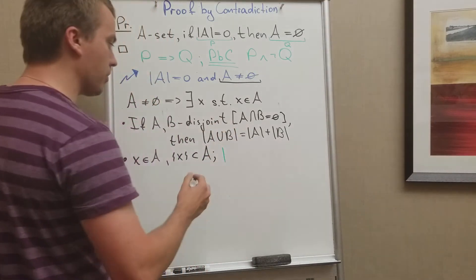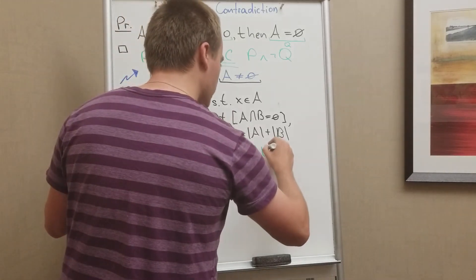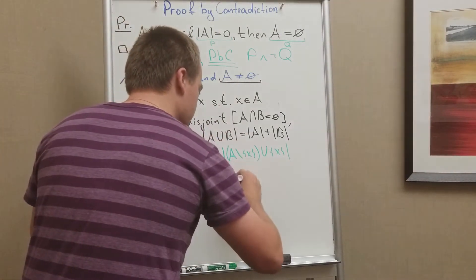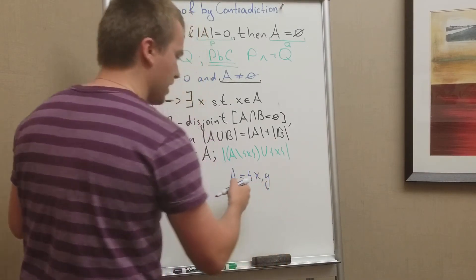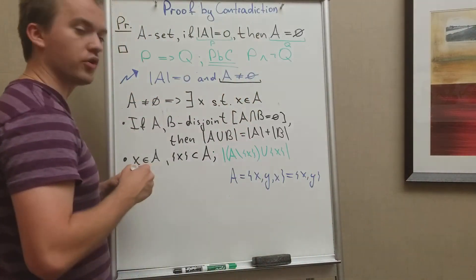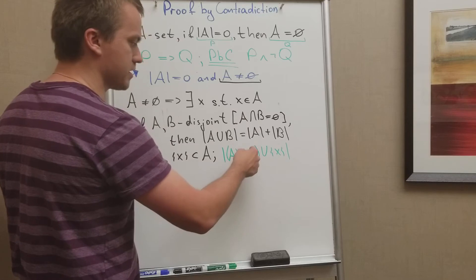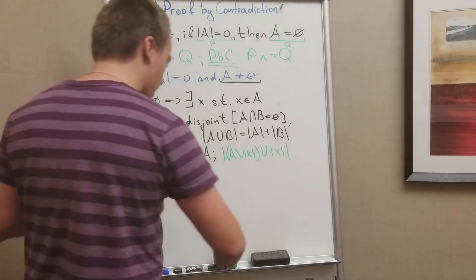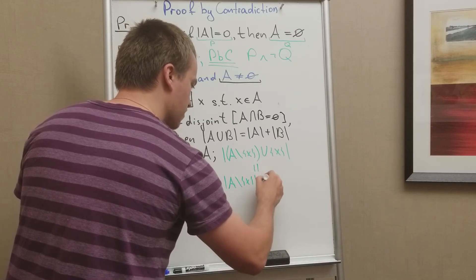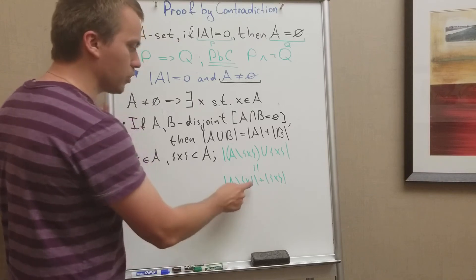I consider the decomposition: (A minus {x}) union {x}. We also assume elements in A don't repeat, so if we have elements x and y, x is just x. With this, A minus {x} and {x} are disjoint, so by the inclusion-exclusion principle, the cardinality of A equals the cardinality of (A minus {x}) plus the cardinality of {x}.